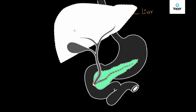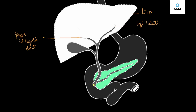Looking at the labellings, we find the right hepatic duct, which arises from the right lobe of the liver. Similarly, there is the left hepatic duct. These two ducts arise from the liver and join together to form the common hepatic duct. The common hepatic duct is formed by the combination of the left and right hepatic ducts.